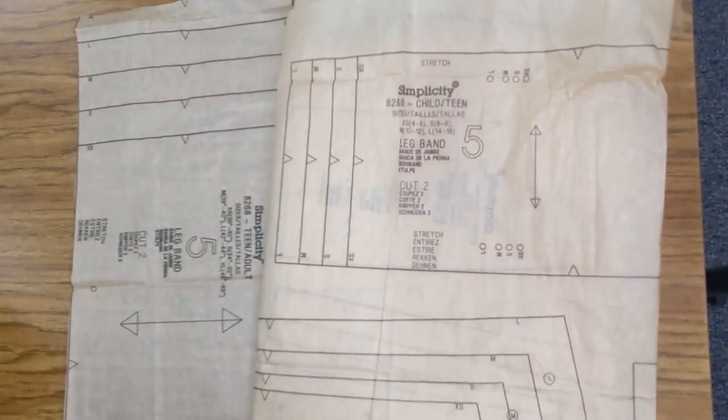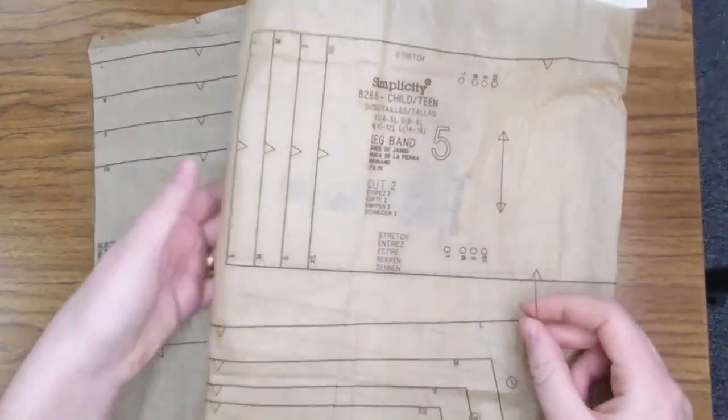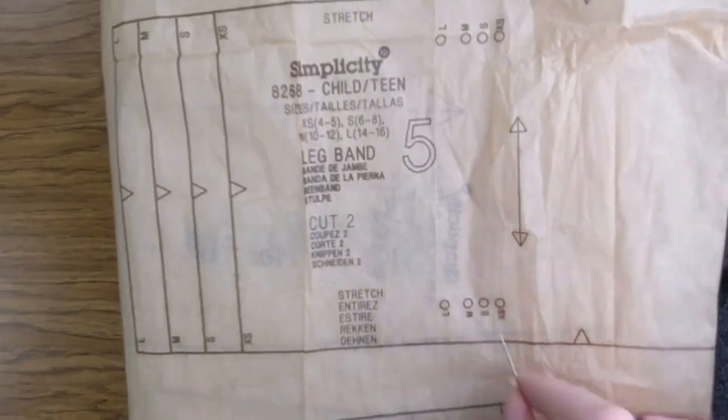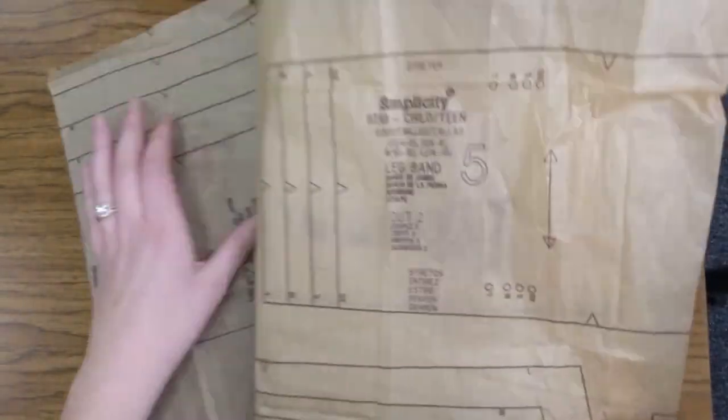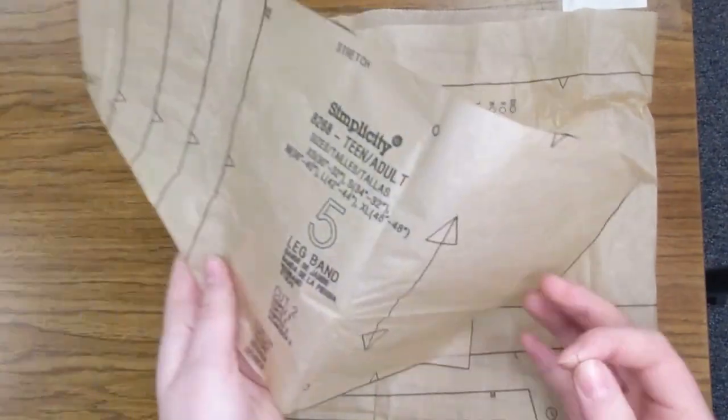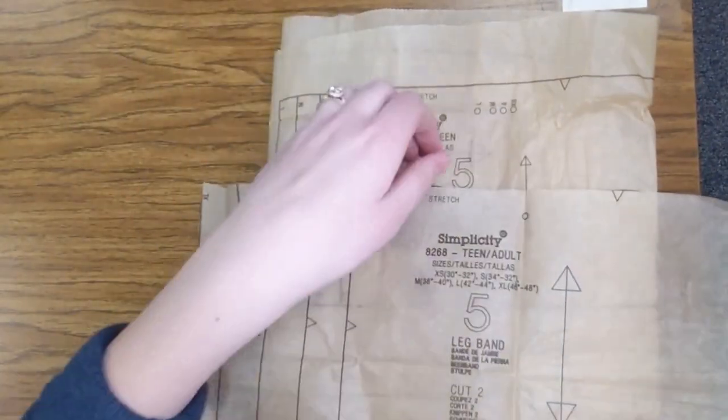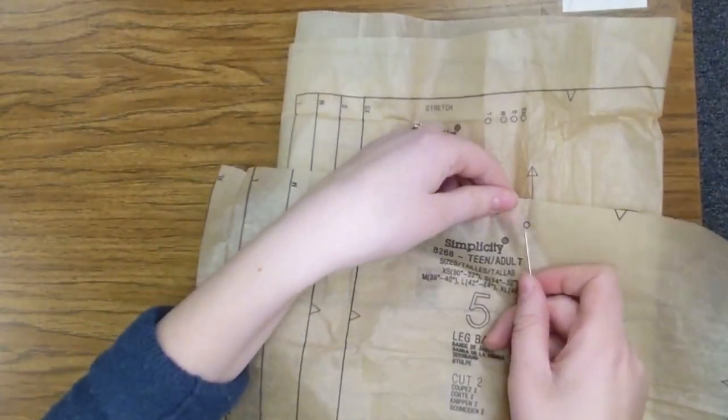And then later, when I'm marking my dots, I would look for any dots that are marked small, like that one, or just any generic dots, like some dots are on this piece right here. That's the same dot for all sizes.